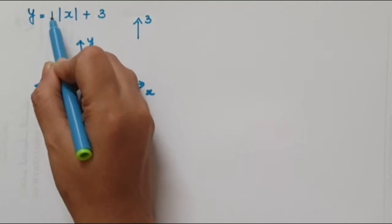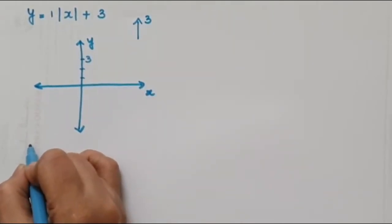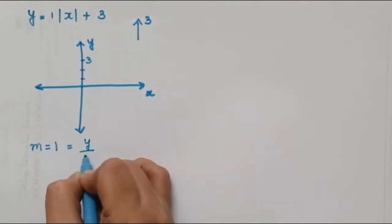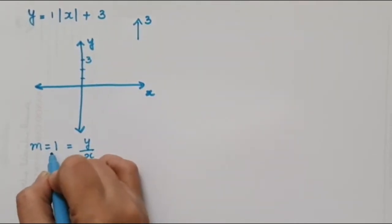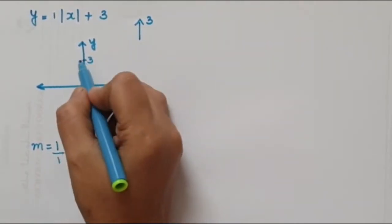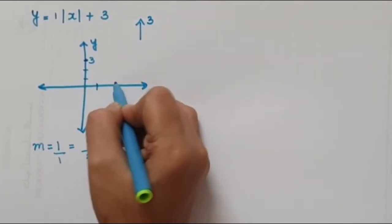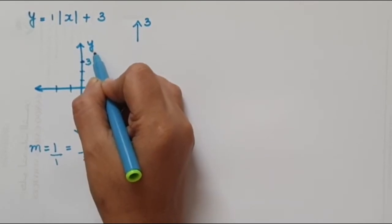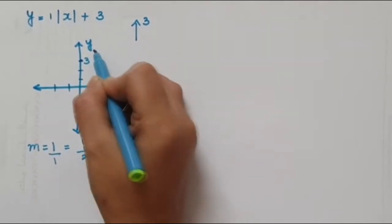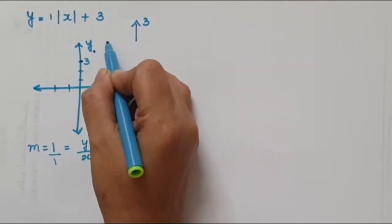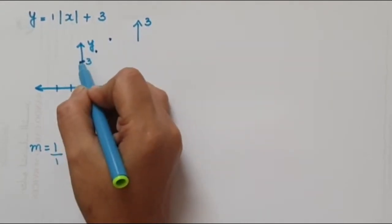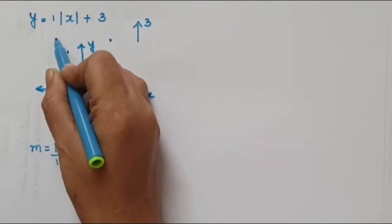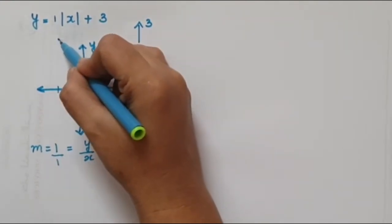The number 1 in front is the slope m, so m = 1. That means y over x is the slope — y is 1 and x is 1. So from the vertex, if you want to make your graphs more accurate, you move 1 unit in the x direction and 1 unit in the y direction to get each next point.